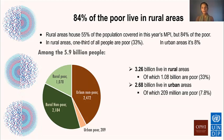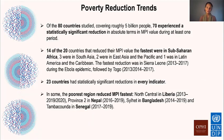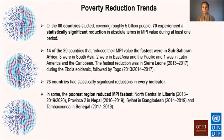Rural areas are another focus. Of the 5.9 billion people covered, 55% live in rural areas, and 84% of the poor do. One in three rural dwellers are multidimensionally poor by national definition. But there are positive trends: of the 80 countries and 5 billion people studied, 70 had a statistically significant reduction in at least one time period.